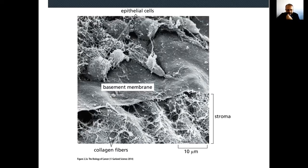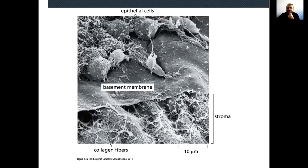In the connective tissue, you can see collagen fibers — some larger, some smaller — and there are connective tissue cells. The connective tissue surrounding the epithelial tissue is called stroma. So basement membrane is a very hard, solid, almost impossible to pass structure — a strong border between two different kinds of tissues. This is a three-dimensional structure.